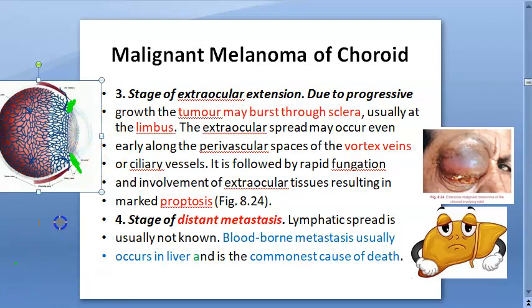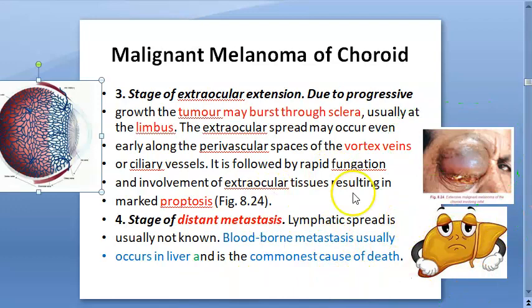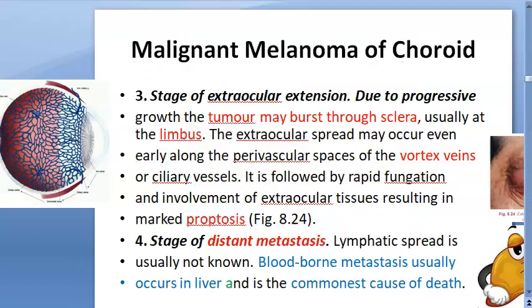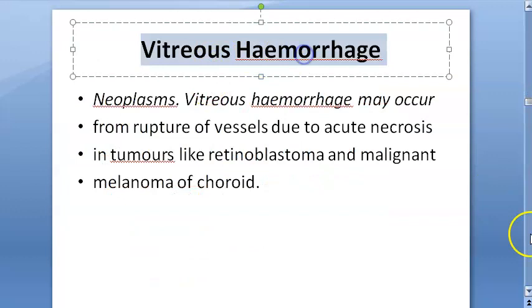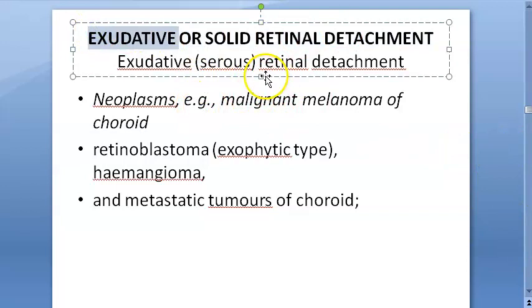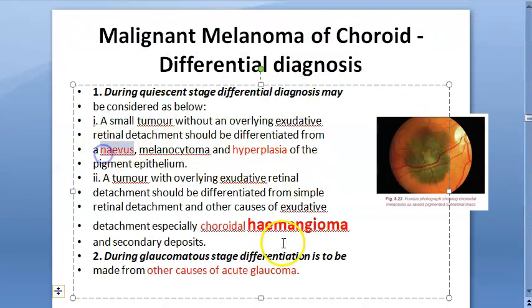This leads to proptosis, as you can see here. Then distant metastasis occurs, most commonly to the liver, which is the common cause of death. The tumor can also lead to cataract, glaucoma, vitreous hemorrhage, and exudative (serous) retinal detachment.